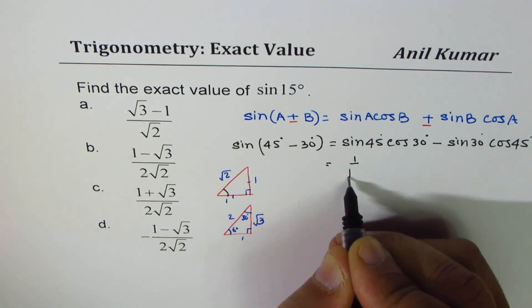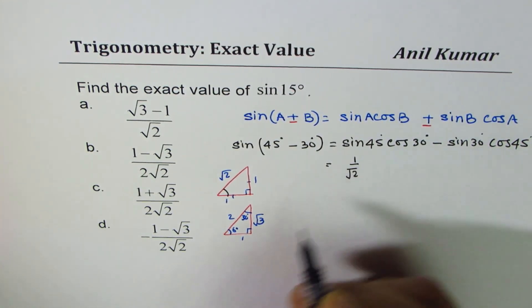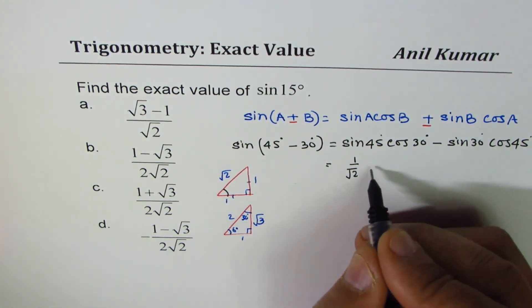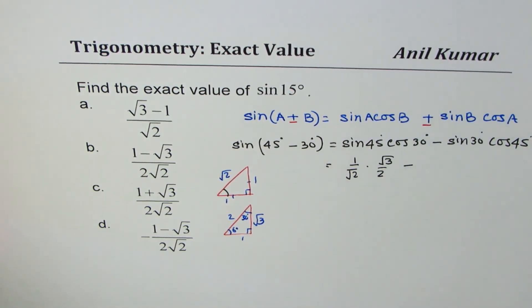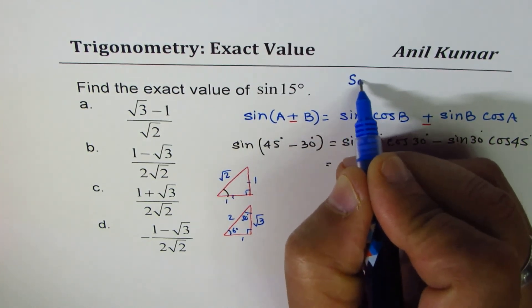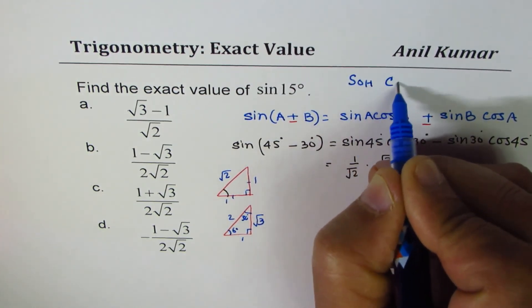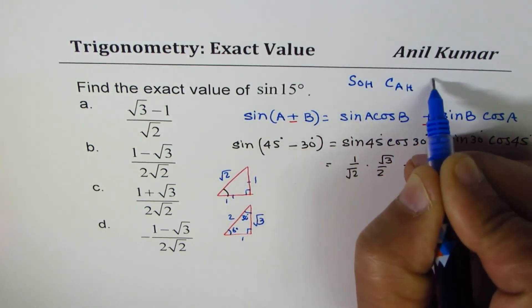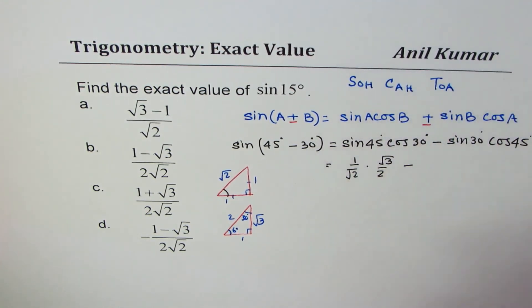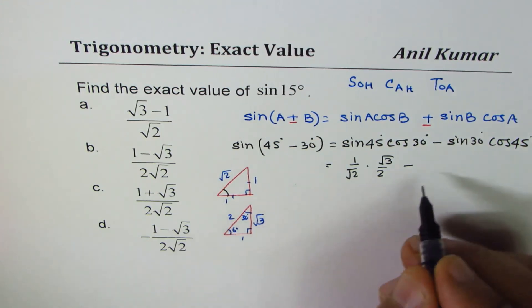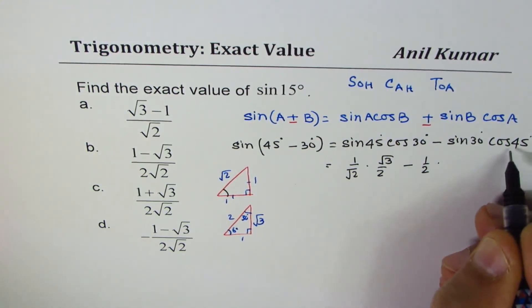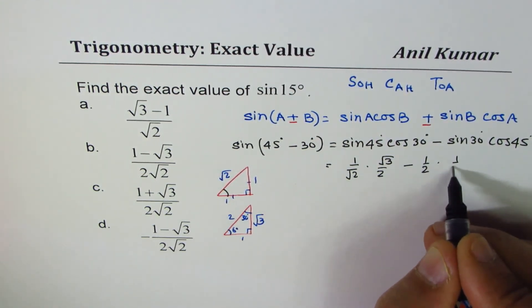What we get here is sin 45, opposite is 1 over square root 2. Cos 30, square root 3 over 2, minus sin 30, opposite over hypotenuse. This is from SOH CAH TOA: sine is opposite over hypotenuse, cos is adjacent over hypotenuse, tan is opposite over adjacent.